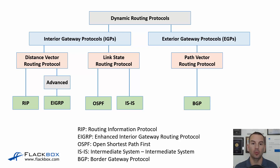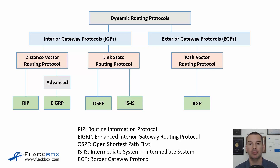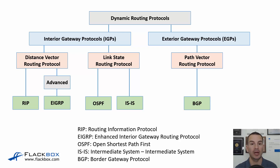Let's look at what the different routing protocols are and what type they fit into. Our IGPs are RIP (the Routing Information Protocol), EIGRP (the Enhanced Interior Gateway Routing Protocol), OSPF (Open Shortest Path First), and IS-IS (Intermediate System to Intermediate System). RIP and EIGRP are distance vector routing protocols, and OSPF and IS-IS are link state routing protocols. And those are all the IGPs in use today.